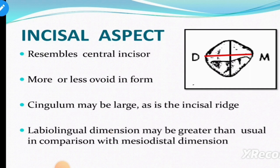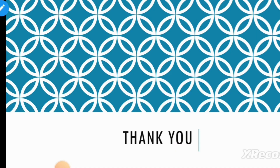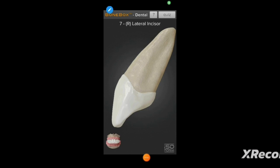For the incisal aspect, it is similar to the central incisor but less ovoid in form — much less oval. The marginal ridges are less prominent than the central incisor — not as prominent. The single incisal ridge is larger, and the labio-lingual dimension is larger than the mesio-distal dimension. It exhibits more convexity from the lingual angle and is much more rounded, with no visible line of demarcation because of the high degree of convexity.